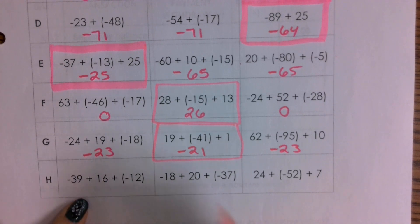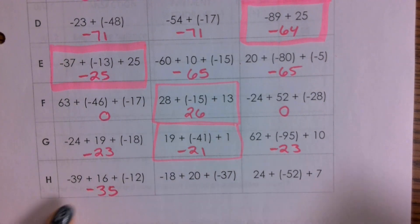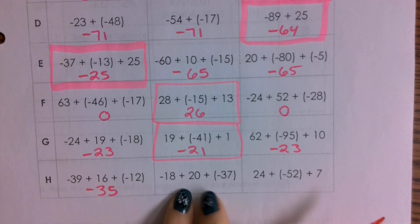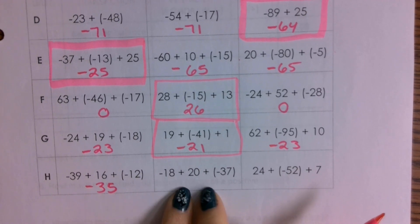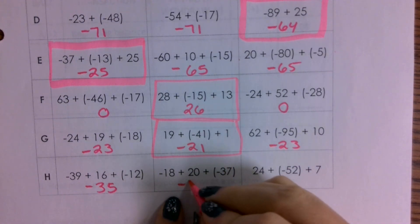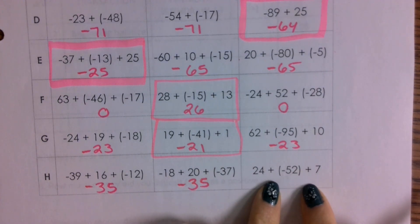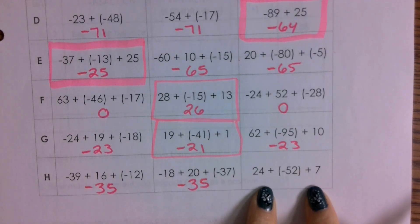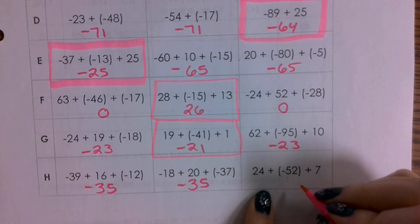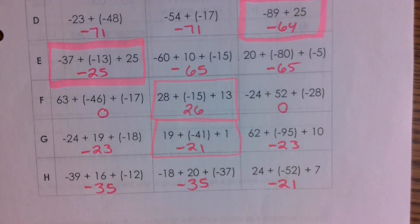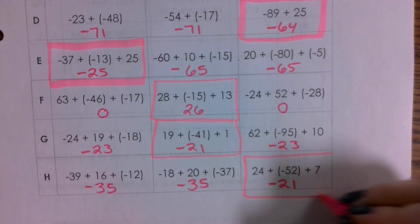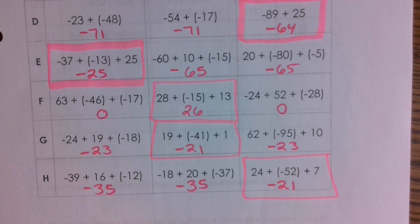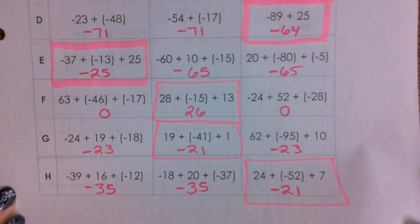For problem H, answer one — negative 35. Christopher, answer two — negative 35. Judy, answer three — negative 21. So the one that does not belong is negative 21. You're just going through and identifying things that are not like the others — two of them were the same, one was not. Everybody good? Let's flip to the back.